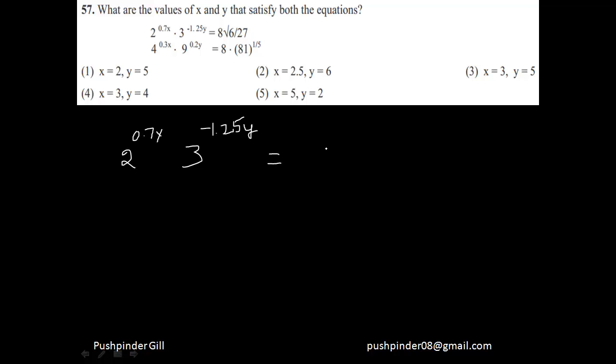This is 8 into root 6 by 27. So 8 is nothing but 2 to the power 3. Root 6 is nothing but 2 to the power 1/2 into 3 to the power 1/2. And 1 by root 27 is nothing but 3 to the power minus 3/2.